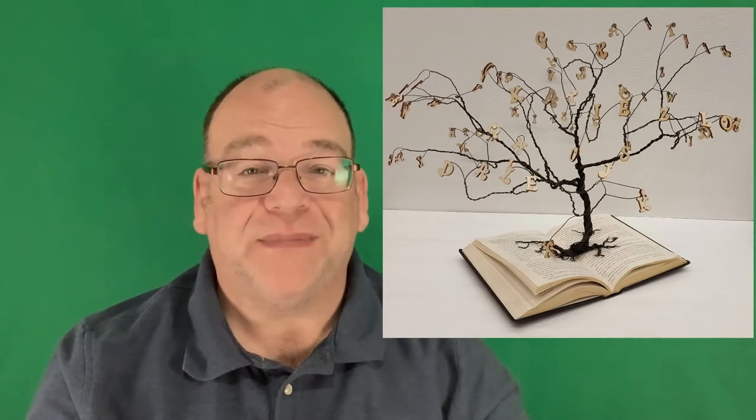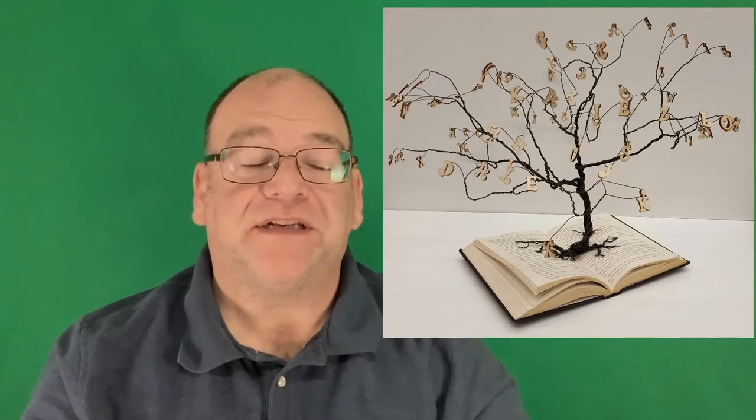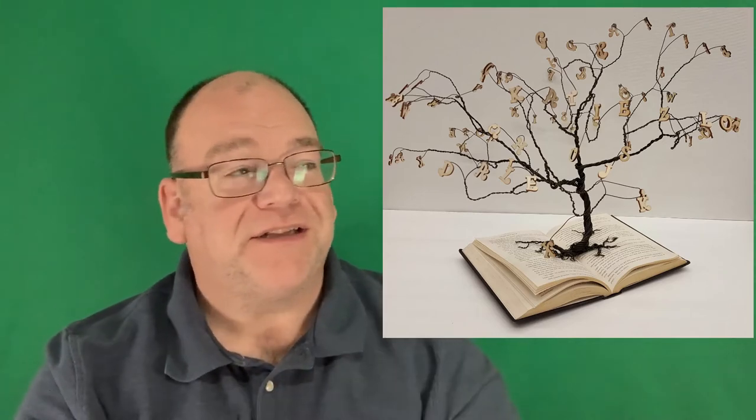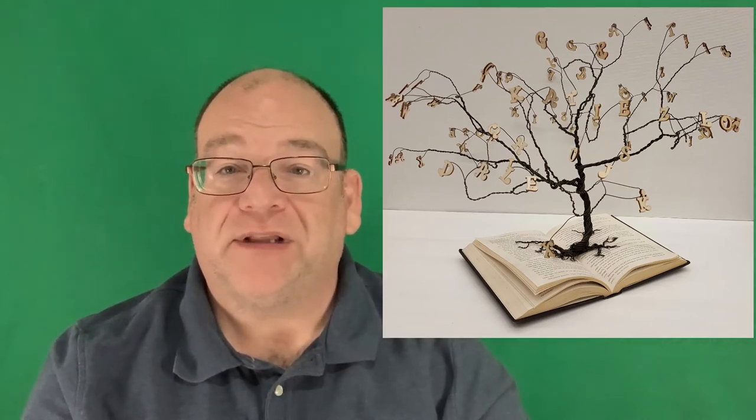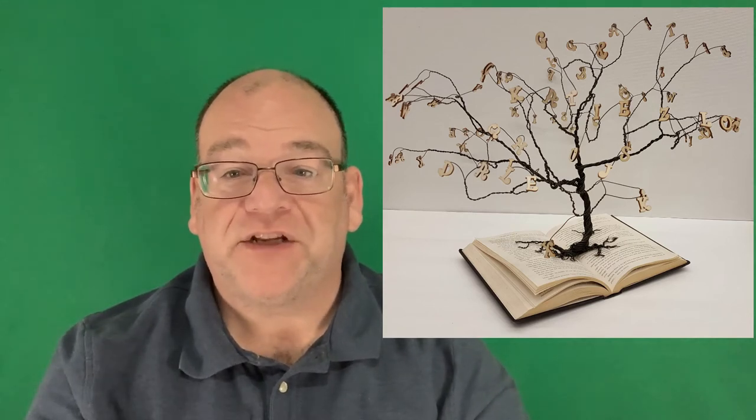Another unit I do is bonsai trees. We explore what bonsai means in history and then we do these wire trees. It's very easy to just follow a formula and make a tree, but you can see that these are very expressive and personal. We have one growing out of a book with letters instead of leaves, another one featuring a car, and a tree with metallic leaves growing out of it. Each one had a personal message, and students do a half-page writing assignment explaining what they created, which goes on display along with their artwork.